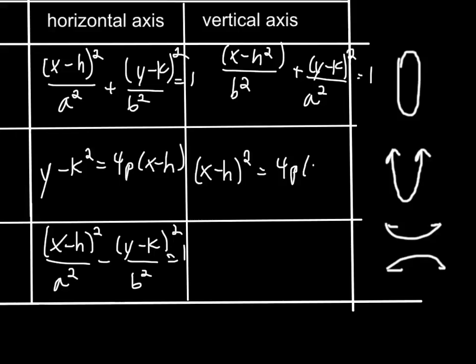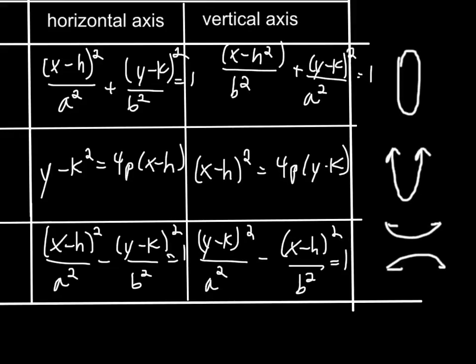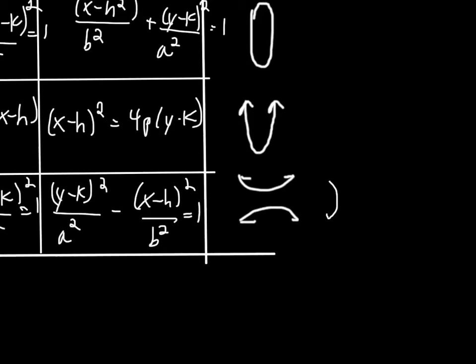The difference between the horizontal axis and the vertical axis formulas is whether, for example, our hyperbola opens up and down or left and right. Same with our parabola, it can open up or down, and our ellipse can be long instead of tall.